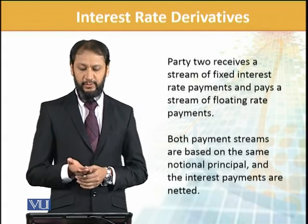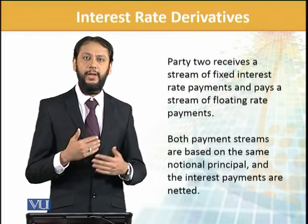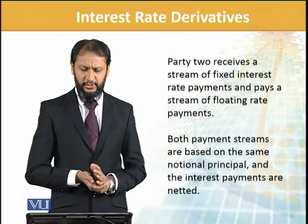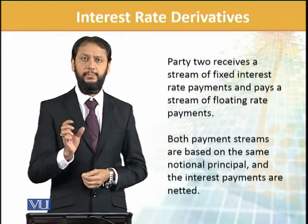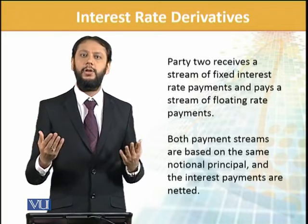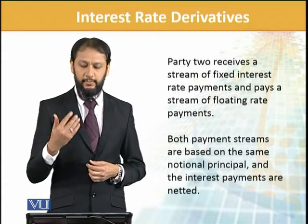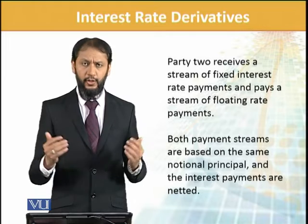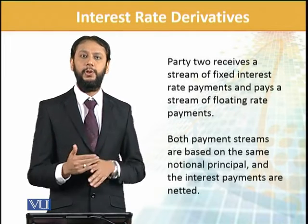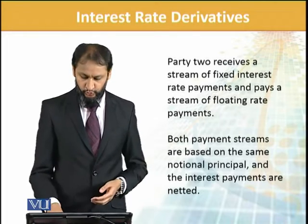The other party receives a stream of fixed interest and pays a stream of floating. So that floating mechanism comes from there and you pay your floating liability. Both payments are based on the same notional principal — the deal is happening on 100 million, 1 billion dollars, whatever the notional amount is, normally based on the loan taken. The amount is determined on that and the payment nets out. Effectively, your exposure shifts from fixed to floating, or floating to fixed, depending on your choice.